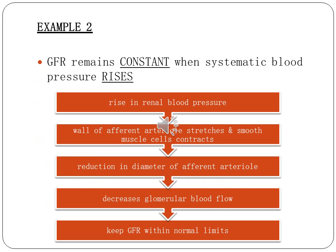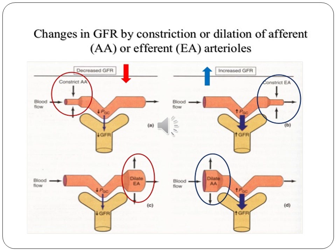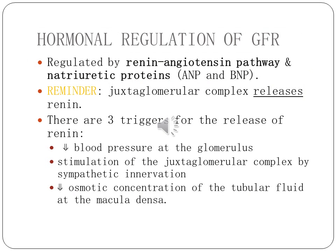Another example is when systemic blood pressure rises. The wall of the afferent arteriole will stretch and the smooth muscle cells will contract. This results in a reduction in diameter of the afferent arteriole, which leads to decreased glomerular blood flow and keeps GFR at a normal rate. This recap shows how changes in GFR occur through constriction or dilation of afferent and efferent arterioles.